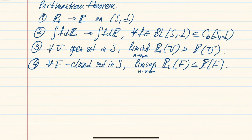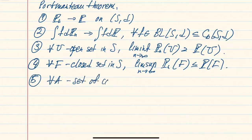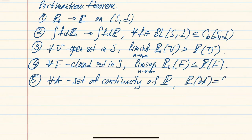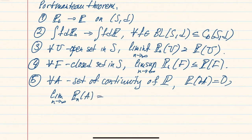Conditions three and four are obviously equivalent. The next condition concerns sets of continuity of P — meaning the probability of the boundary of the set is zero. For such sets, you don't need to look at lower or upper limits; you just take the limit of the probabilities of the set and get the limiting probability.